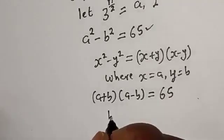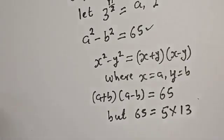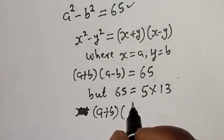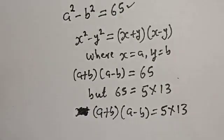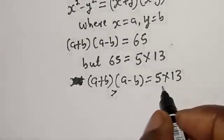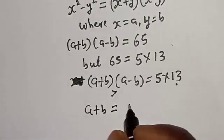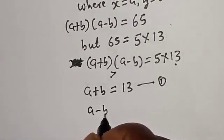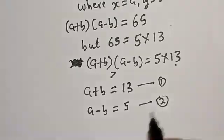Now, 65 is equal to 5 multiplied by 13. So (a + b)(a − b) = 5 × 13. Since a + b is greater than a − b, we assign a + b equal to 13 — let's call this equation 1.